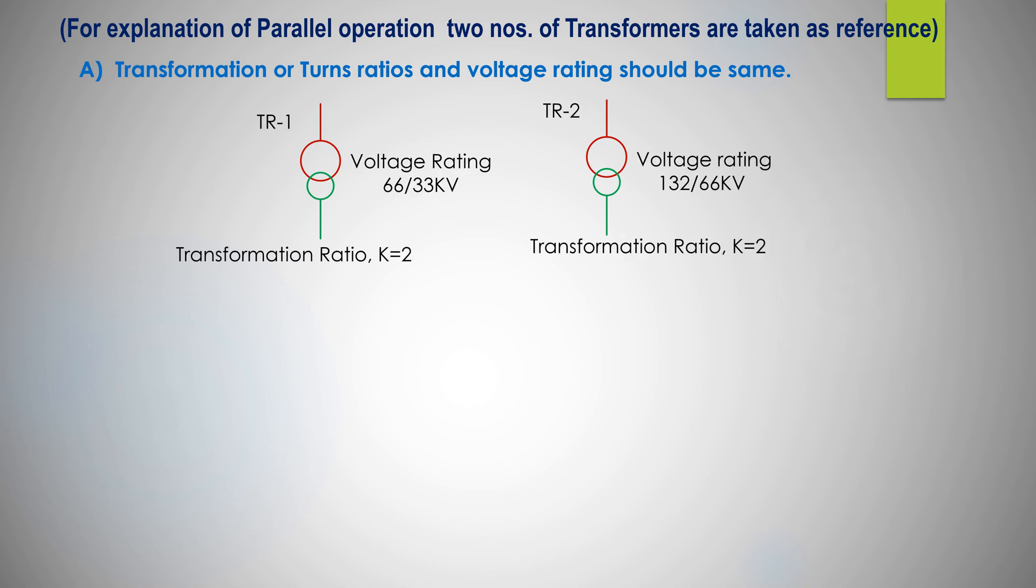As example, a transformer of voltage rating 66/33 kV of transformation ratio 2, another transformer 132/66 kV of transformation ratio also 2. So the transformer should not be parallel as their voltage ratings are different: one of 66/33 kV and another of 132/66 kV.